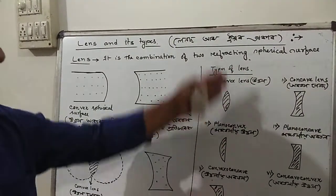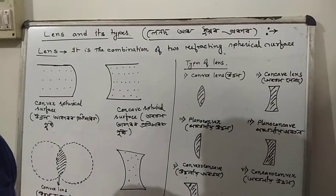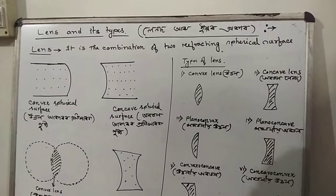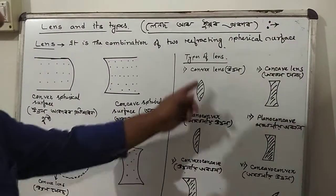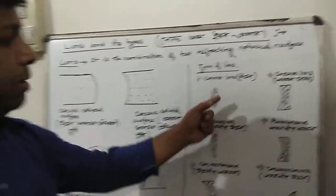Types of lens. There are six types of lenses. First lens - what do we see? This is convex lens. Convex lens, convex means...